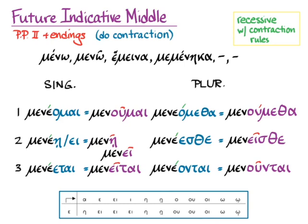After doing the contraction and applying recessive accent to the uncontracted form, we get: menumai, menetai, menumetha, menesthe, and menuntai. Now meno actually only really ever appears in the active, so I'm not going to translate these, but you know how to translate the middle. These endings are still what you need for other verbs that do use the middle with a contracted second principal part. Remember to check context for the second person singular middle of the indicative and the third person singular active of the indicative, because they have the same form.